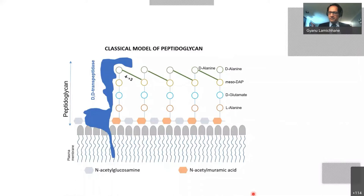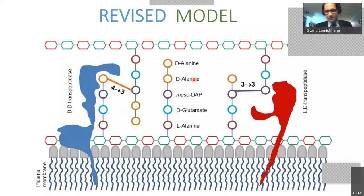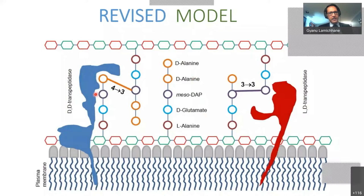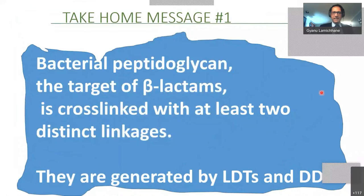Here is the classical model again: one enzyme class — the DD transpeptidase — makes the peptidoglycan via 4-3 linkages. This is incorrect and needs to be thrown away. Here is the revised model: in addition to the 4-3 linkage-generating DD transpeptidase, there is also another enzyme that makes 3-3 linkages. Take-home message number one: bacterial peptidoglycan — the target of beta-lactams — is cross-linked with at least two distinct linkages: 4-3 and 3-3. The 3-3 linkages are made by LD transpeptidases, and the classical 4-3 linkages are made by DD transpeptidases.